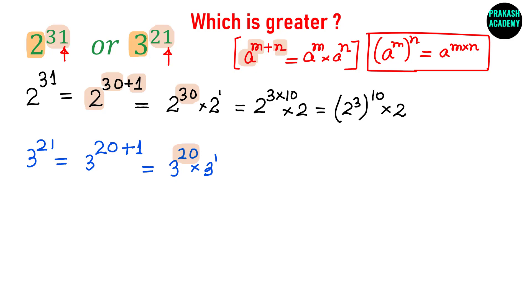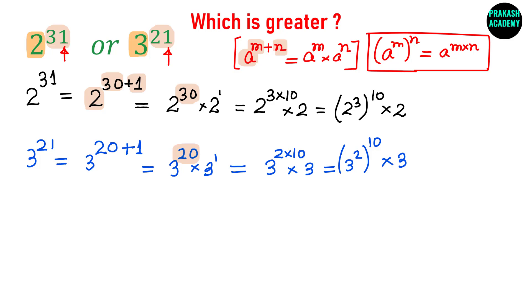Now if I do the same steps for the second expression, we will have 3 raised to the power 2 times 10, multiplied by 3, and this can be written as 3 raised to the power 2, all raised to the power 10, multiplied by 3. Now we have a very important result: the exponents are now equal — here I have exponent 10 and here also I have exponent 10.